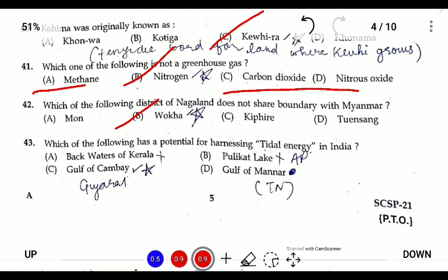Question forty-three: which of the following has the highest potential for harnessing tidal energy in India? Gujarat has the highest potential for harnessing tidal energy. The Gulf of Khambhat is located in Gujarat. Pulikat Lake is in Andhra Pradesh/Tamil Nadu, and the backwaters of Kerala are near the ocean but do not have sufficient tidal energy.